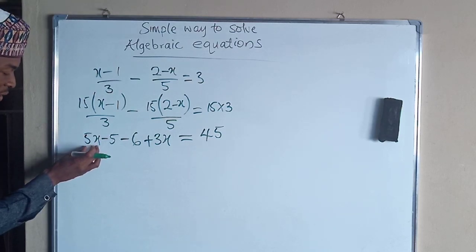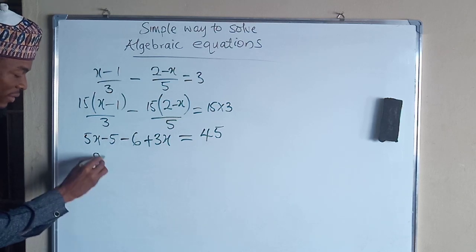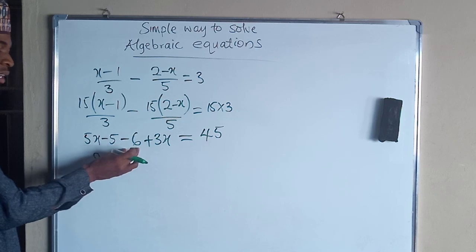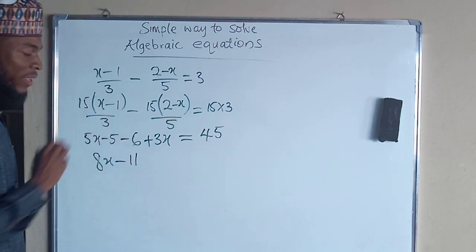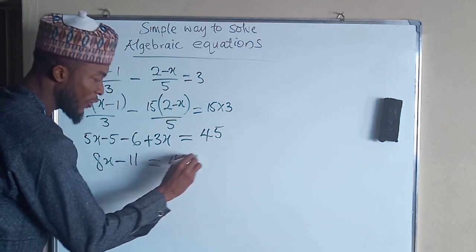Now we know that 5x plus 3x is going to give us 8x. Negative 5, negative 6 is going to give us negative 11. And this is equal to 45.